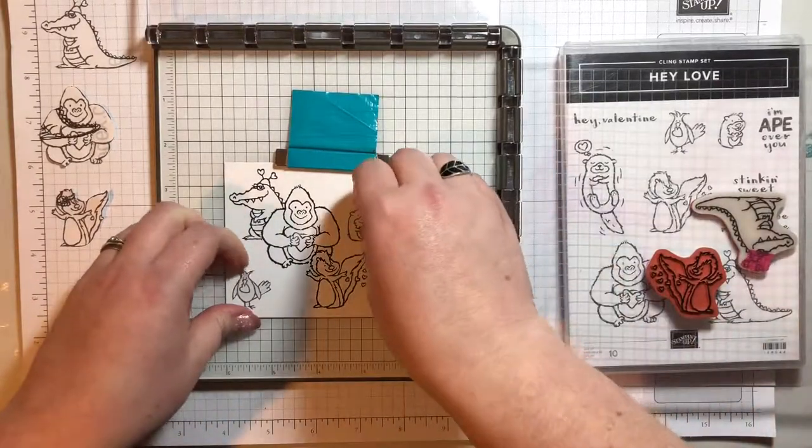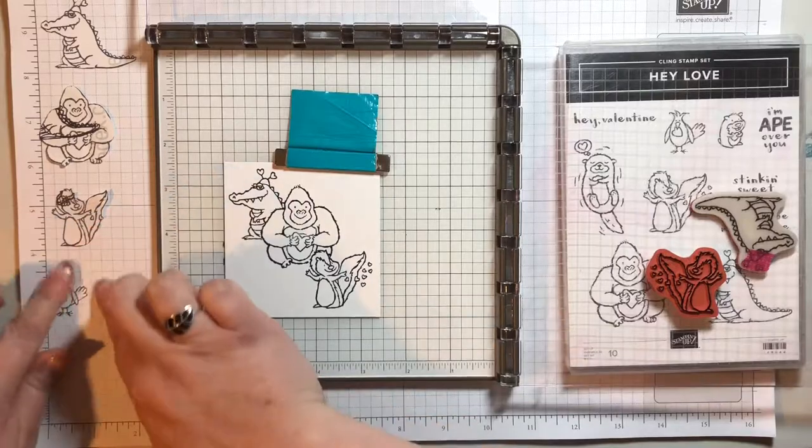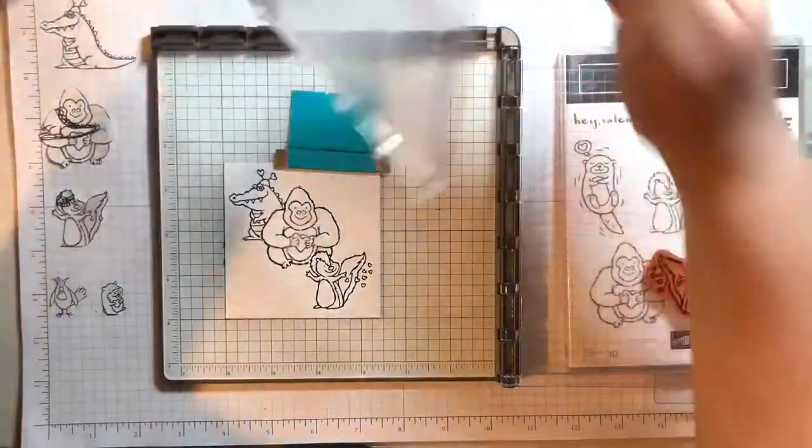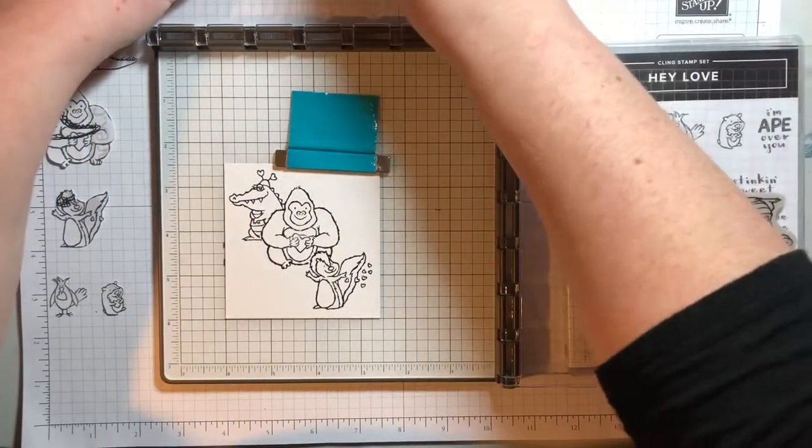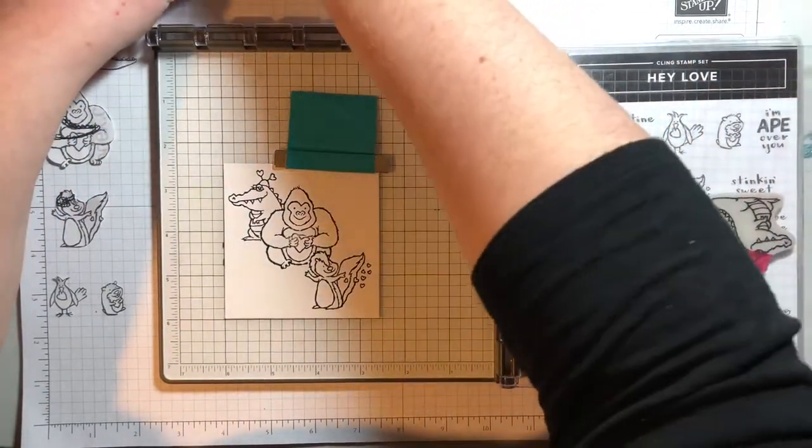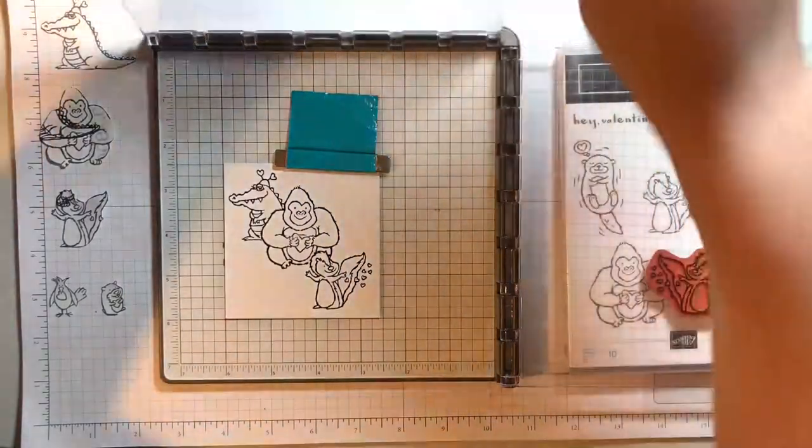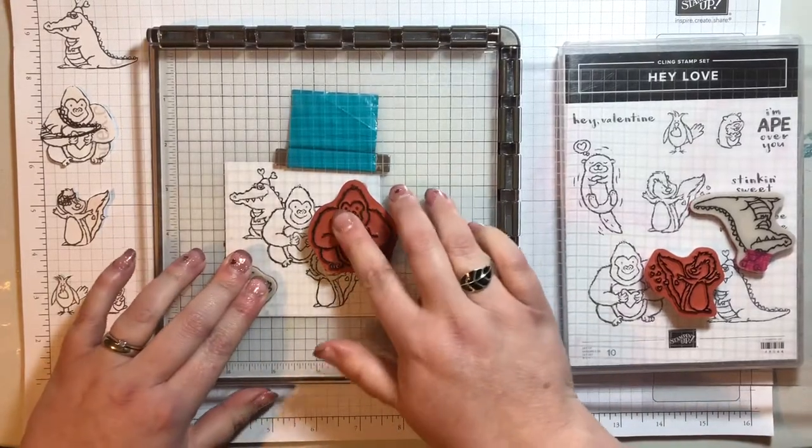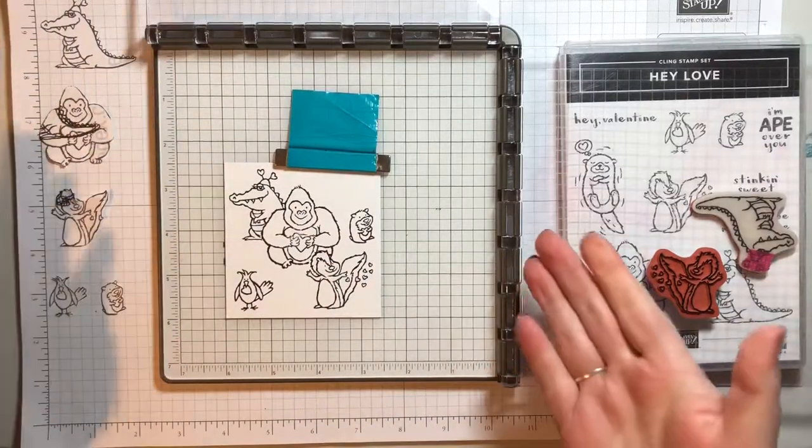Now these little guys, we can take their masking off. Turn their plate over and ink them up and stamp them too. And our characters are done.